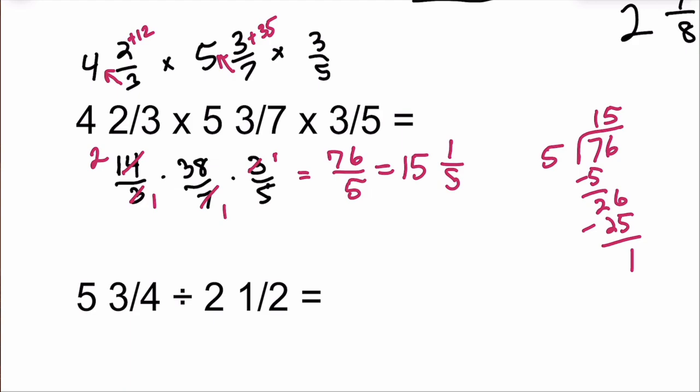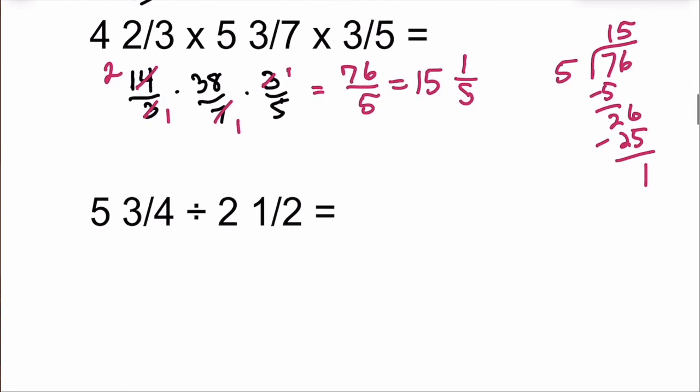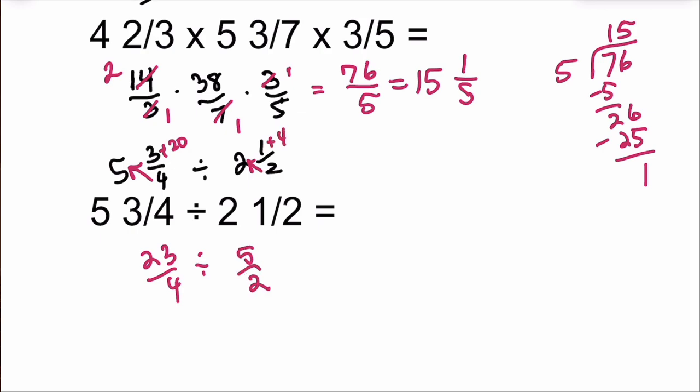Now keeping that in mind, let's talk about how we do the bottom number here. 5 and 3 fourths divided by 2 and 1 half. 5 and 3 fourths divided by 2 and 1 half must be an improper fraction, not a mixed number as we proceed to the next step. I multiply, get 20, I add that on to the 3, so I'm going to get 23 over 4. Multiply 2 by 2 is 4 plus 1 is 5.